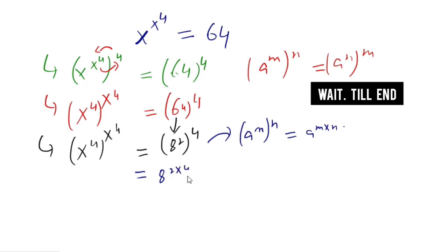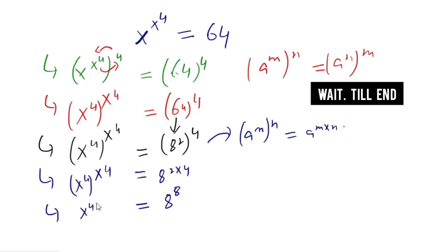On the right-hand side, m is 2 and n is 4, so we multiply to get 8^(2×4). On the left-hand side it remains as it is, so the right-hand side becomes 8^8. On the left-hand side we have x^4 to the power x^4. Comparing both sides, we can see that x^4 is equal to 8.